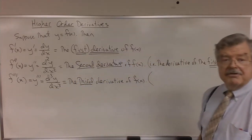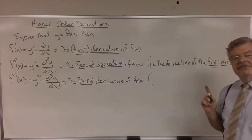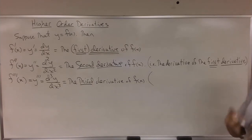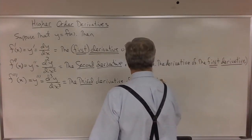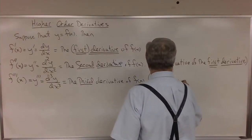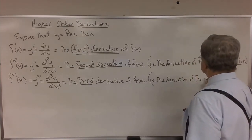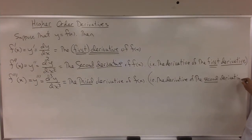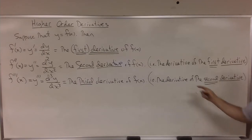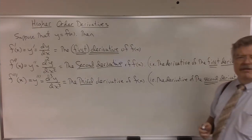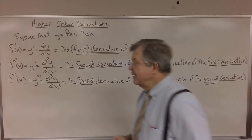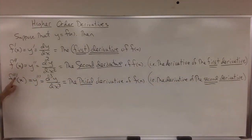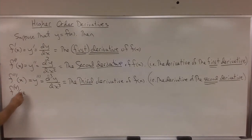And how do we get the third derivative? If you're thinking that we compute the derivative of the second derivative, you're right. The third derivative is the derivative of the second derivative. And is there a fourth derivative? There is. But right about this time, the prime notation becomes very cumbersome, so here's where we change over slightly to a different style of notation.